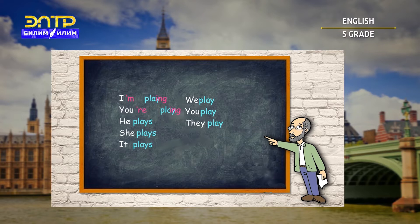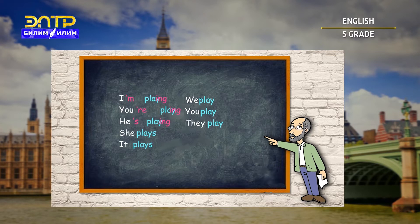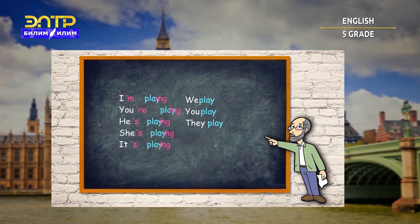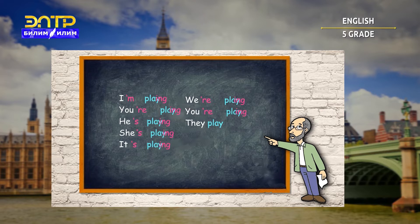Instead of 'you play,' you are playing. She plays — she is playing. It plays — it is playing. We have to change 'we play' into the present continuous tense, so we've got 'we are playing,' 'you are playing,' and 'they are playing.'